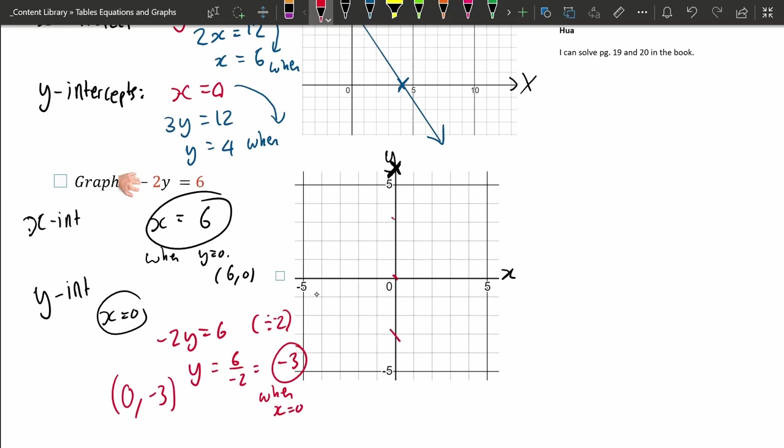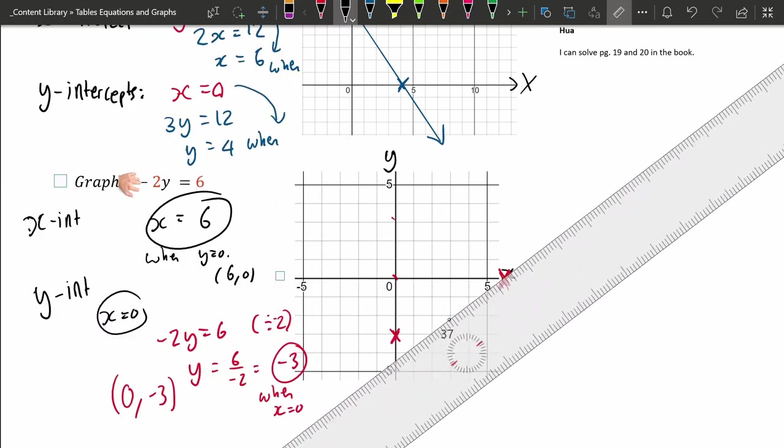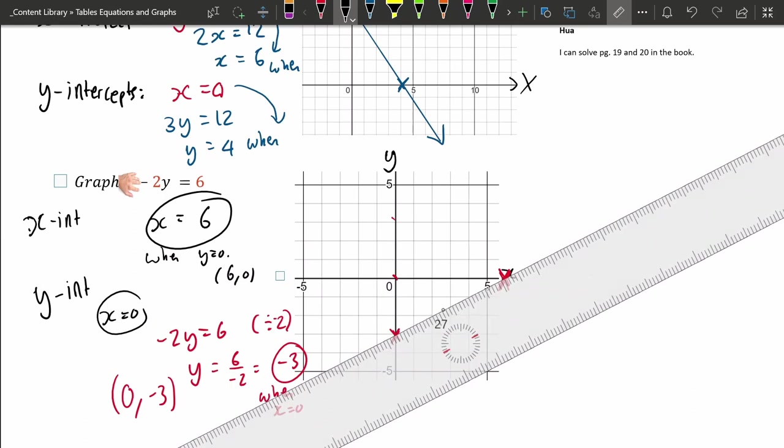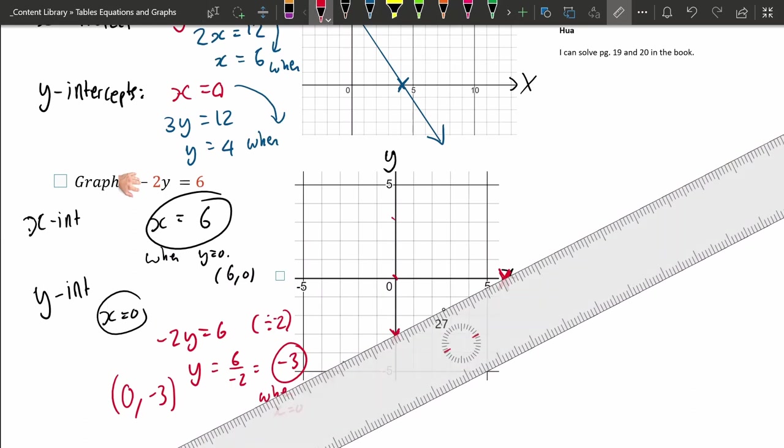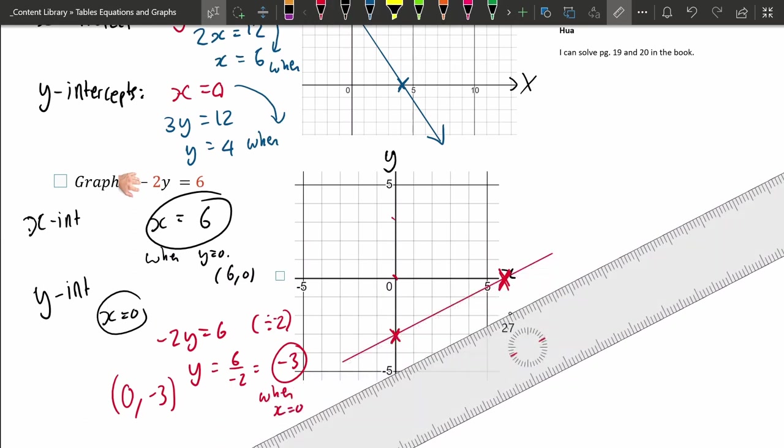X is 0, minus 3. Oops, minus 3 is down here. And X is 6, so I made a mistake. No wonder. So X is 6 over there. Okay, ignore that X I made on the top. Oops. Okay, grab your ruler. Always use the ruler. And there you go.